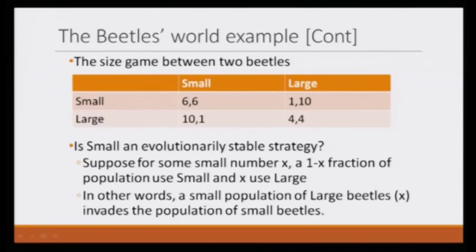Now let us do this mathematically. In this size game, can we call small an evolutionary stable strategy? Small is already present and large is invading. After the invasion, large has proportion x and small has proportion 1 minus x. Small is evolutionary stable when, on average in this new environment — where small beetles are proportion 1 minus x and large beetles are proportion x — if a small beetle does better than a large beetle. But if in this changed environment large does better than small, then we cannot call small an evolutionary stable strategy. This is what we have to check.